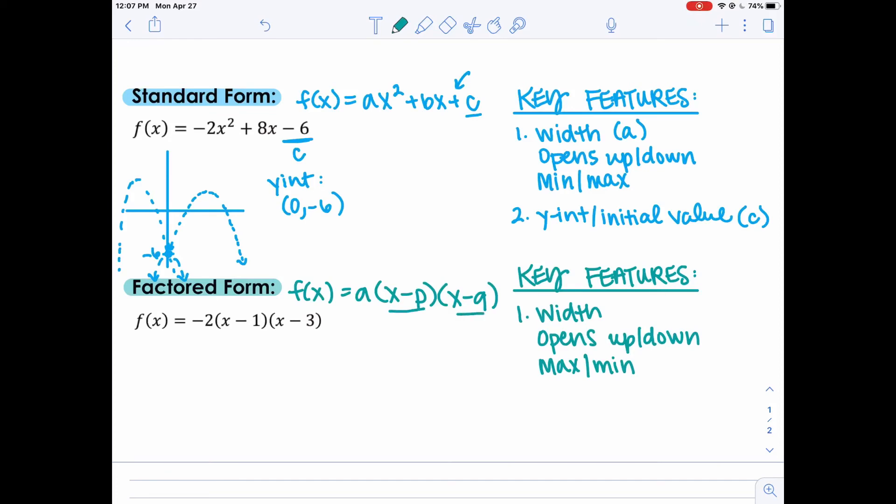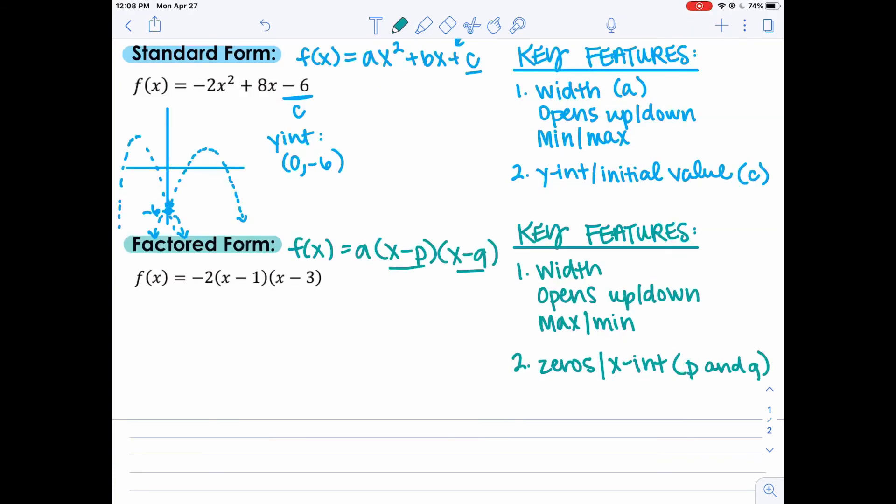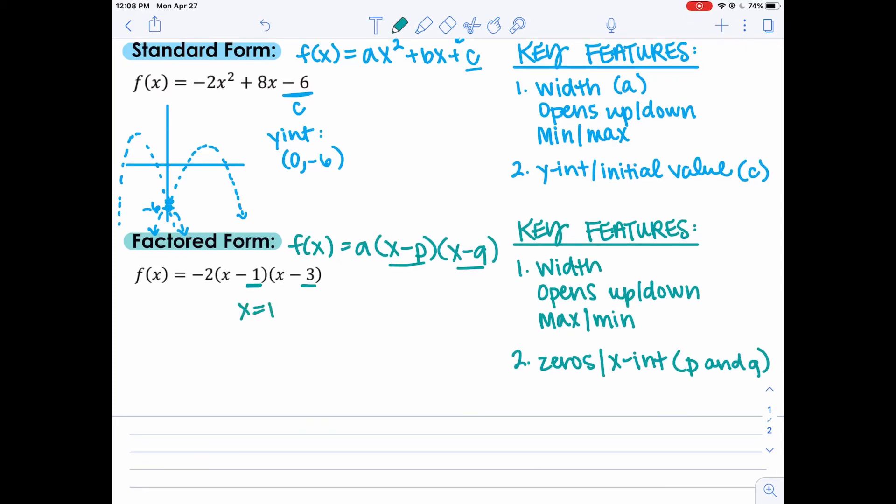Here we have two binomials. Each of these binomials tells us something special. And what it tells us are the zeros of this parabola. Zeros are interchangeably called x-intercepts, also solutions. This is the key feature that has lots of different names. So let's write a few of them. Most commonly called zeros, but also known as x-intercepts. And this comes from p and q. So p and q actually are the zeros of this parabola. So if we look over here at our example, notice that p here is 1, q here is 3. That means that I have zeros at x equals 1 and x equals 3.